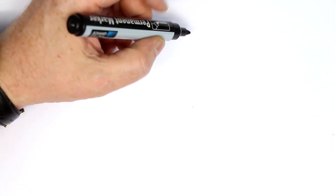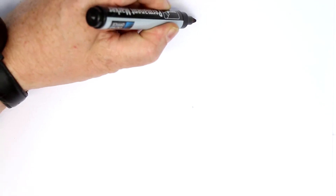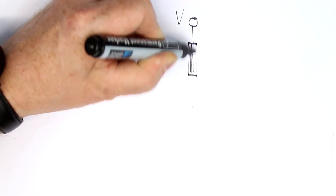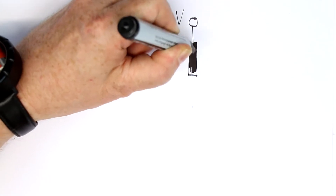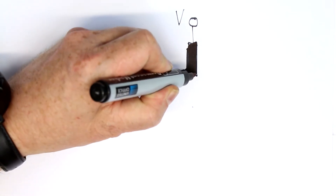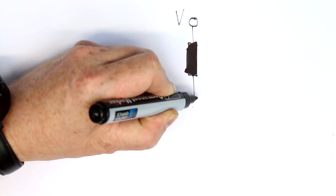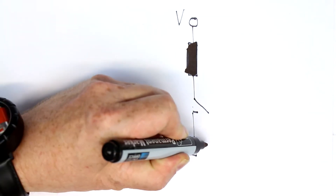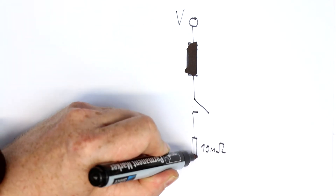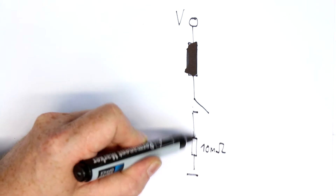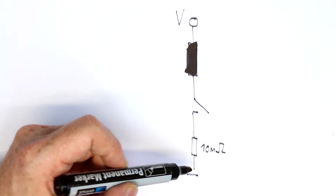Let's recap the simplified schematic of how our power inductor checker works. On top we have a voltage source, then the inductor — pardon the European symbol, in LT Spice we'll use the familiar US version. Then comes the MOSFET, which can be treated as an ideal switch, and finally a shunt resistor of 10 milliohms. In the schematic we'll leave this out; it's simply for converting current to voltage for measurement at the oscilloscope.